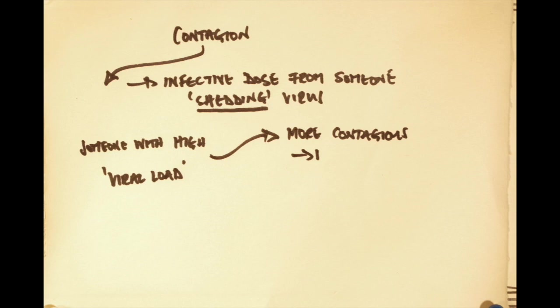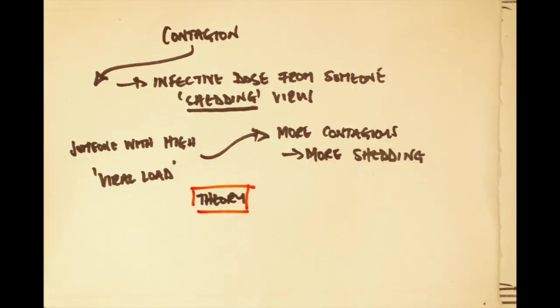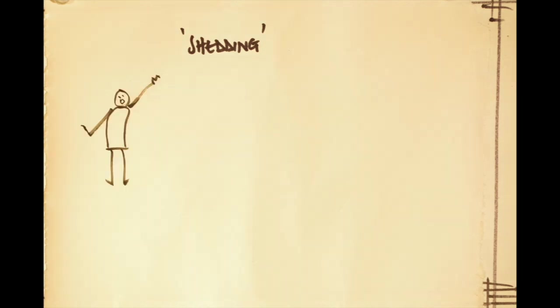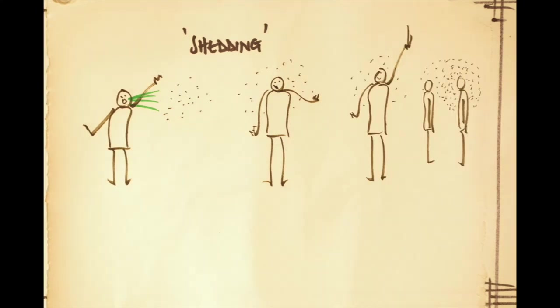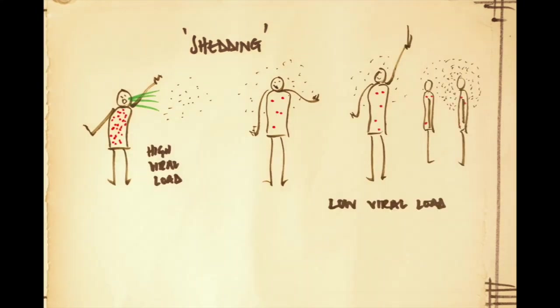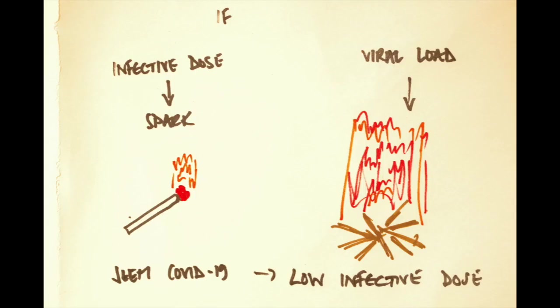Someone with a high viral load — that is, with more virus in them — would be a bigger shedder of virus and therefore more contagious. People with a high viral load will be shedding more and therefore more contagious than people with a low viral load. It does seem to correlate that people with a high viral load also get more symptoms and a worse illness.